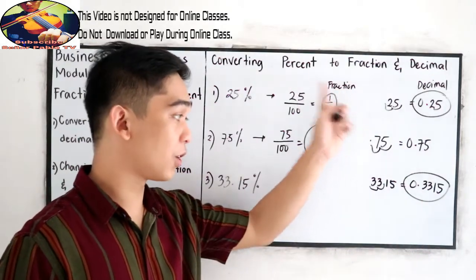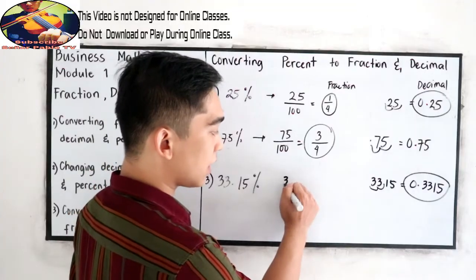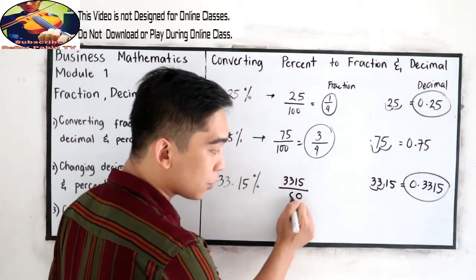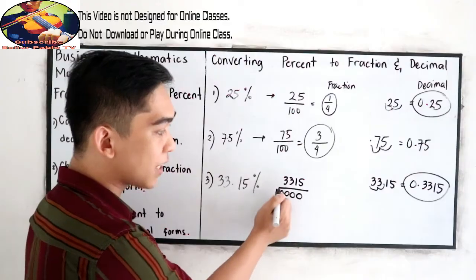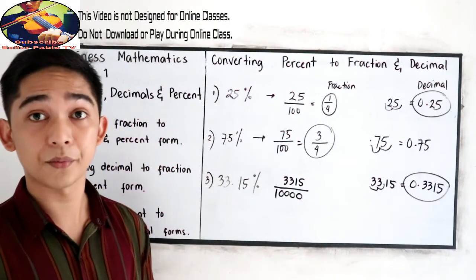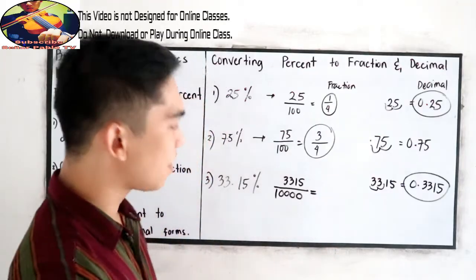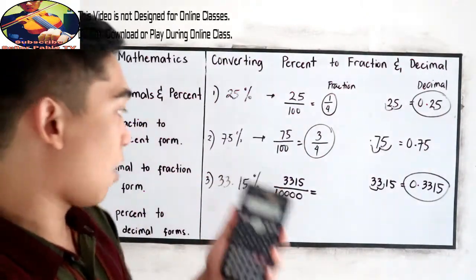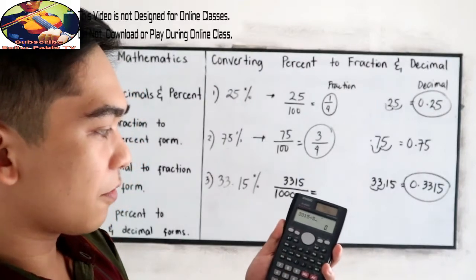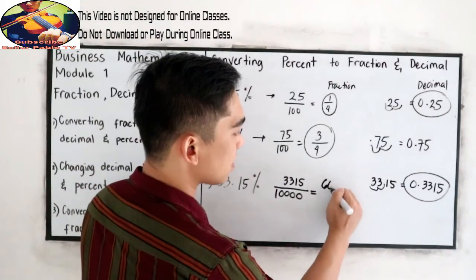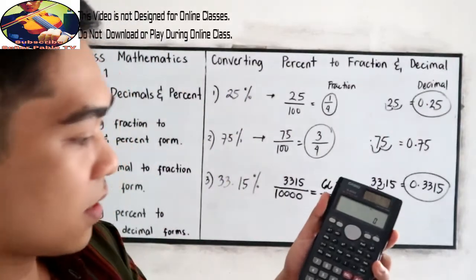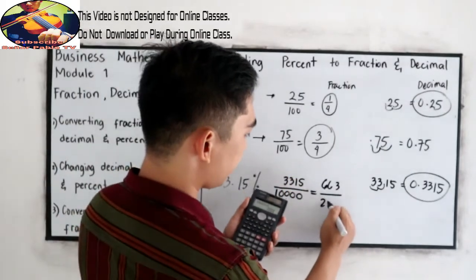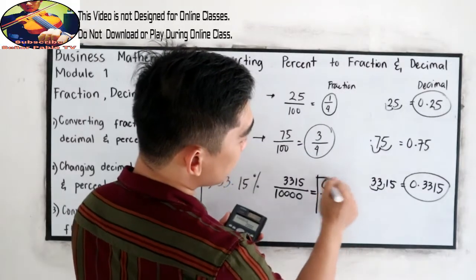Now write it into fraction. Copy 3315 — we have 4 decimal places, meaning we have 4 zeros in our denominator, so that is 3315 over 10,000. Now reduce to lowest terms. It is divisible by 5. Using our calculator: 3315 divided by 5 is 663, and 10,000 divided by 5 is 2,000. So the fraction form is 663 over 2,000.